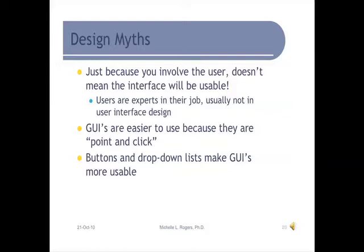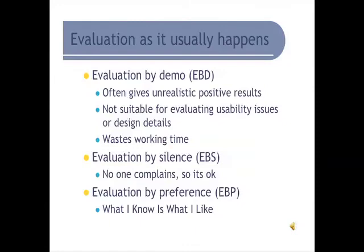There are a couple of design myths you may be experiencing as you develop a system. One big myth is that just because you involve the user, the interface will automatically be usable — and that's often not the case, particularly with users who haven't worked the floor within the last year or two. Another big design myth is that a graphical user interface — GUI — is automatically easier to use just because people can point and click. And that buttons and drop-down lists automatically make GUIs more usable — which we know is not the case with drop-down lists that go on for pages and buttons in the wrong place.